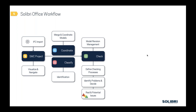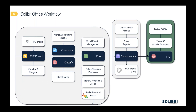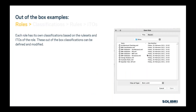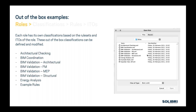Let's have a look at classifications in more detail. This is the Solibri Office workflow, and today we're really going to hone in on how we identify components, spaces, and what we're looking at within the model in the classified area. Looking at an out-of-the-box example — each role we have within Solibri, when we're defining who we are and what we're intending to do, it basically has a preloaded list of classifications, rule sets, and information takeoffs. All of these examples are ones that come out of the box that you can customize and make your own.